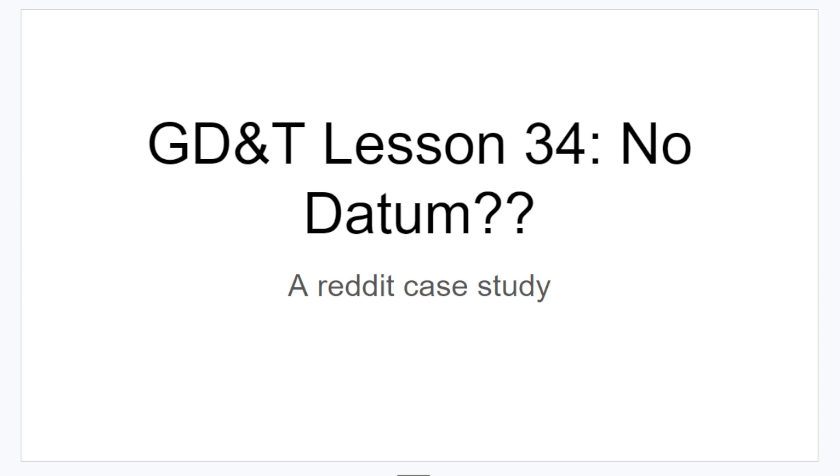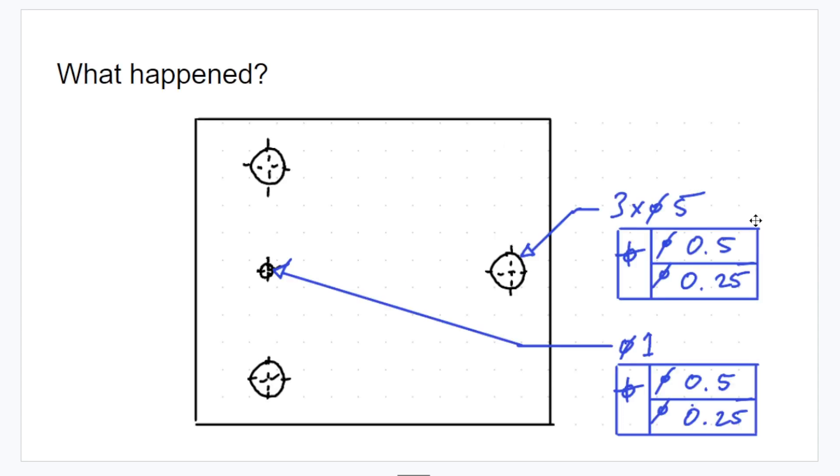Welcome back, everybody. I'm going to be going over a question I saw in the Metrology subreddit, and it's quite an interesting one. So the user had posted an image similar to this, where there was a pattern of three holes and then a fourth hole, and both of them had the same feature control frame, which was a composite positional tolerance with the upper segment to 0.5 and the lower segment to 0.25.